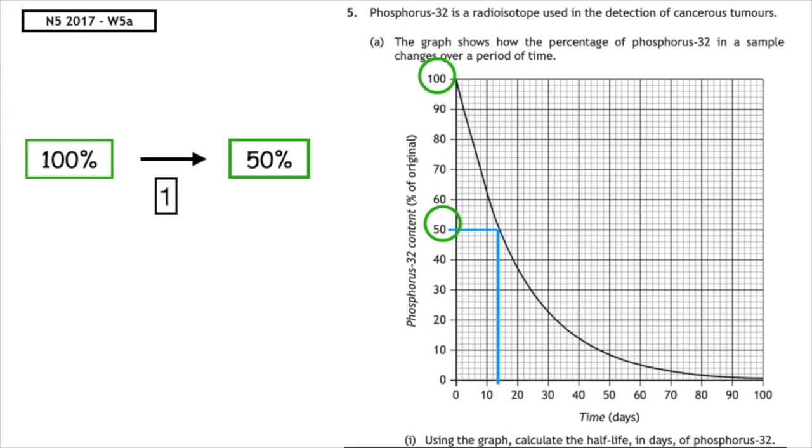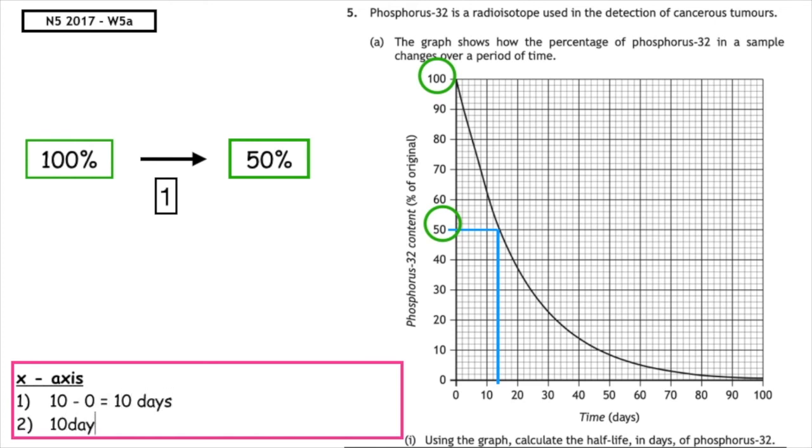What we have to be able to work out is the scale, what each little box on the x-axis represents. So to do that, we would do the two first numbers, which have been plotted on the x-axis, which are 0 and 10. 10 minus 0 equals 10. If we count how many boxes are between those two numbers, there are 5. So we have a total of 10 days divided by 5 boxes, which means each little box represents two days.